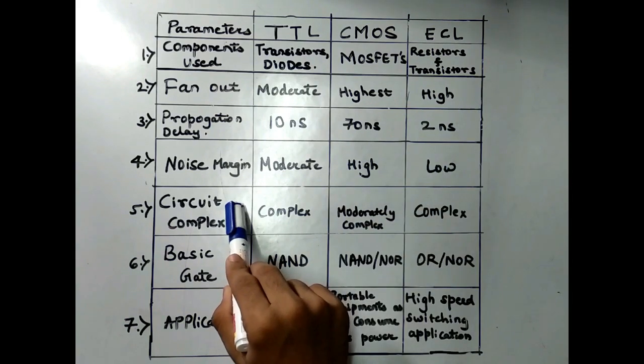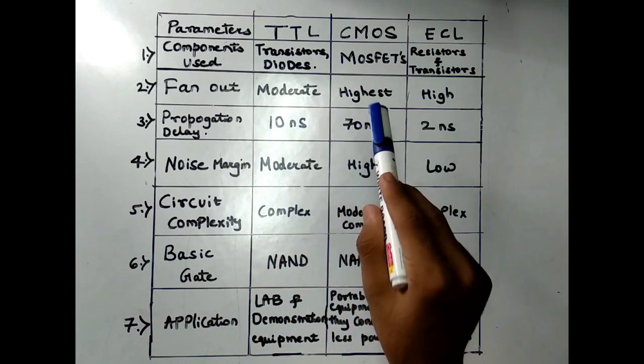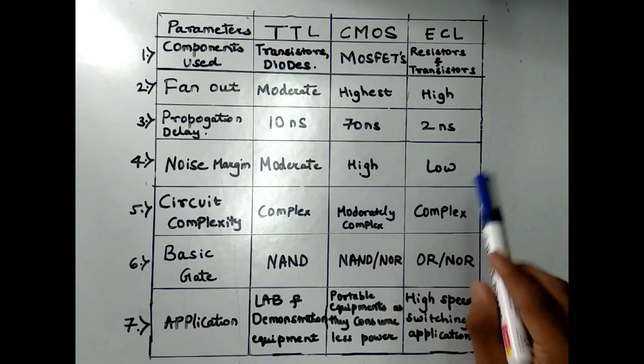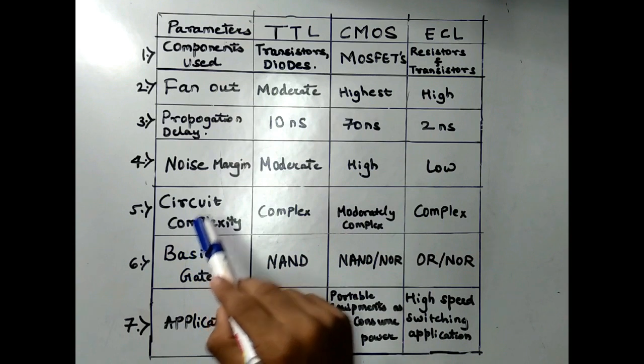The fifth parameter is Circuit Complexity. The circuit complexity of TTL is complex, the circuit complexity of CMOS is moderately complex, and the circuit complexity of ECL is complex.